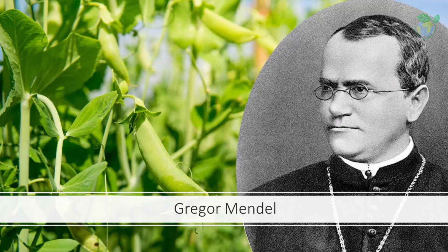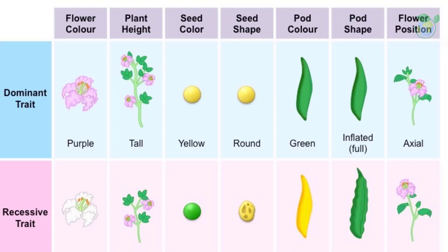The study of genetics began with Gregor Mendel, an Austrian monk who, in the mid-19th century, discovered the basic principles of heredity through his experiments with pea plants. He found that certain characteristics of pea plants, such as seed color, were determined by specific factors that were passed down from parent to offspring. These factors, which we now know as genes, come in pairs and are located on chromosomes.